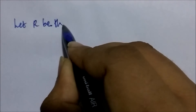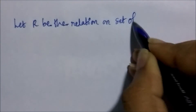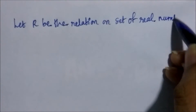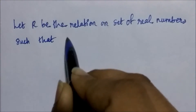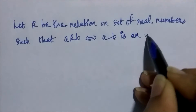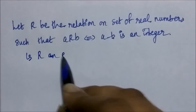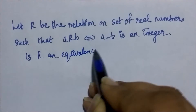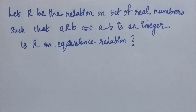Let's see another question. Let R be the relation on the set of real numbers such that A is related to B if and only if A minus B is an integer. The question is: is R an equivalence relation?